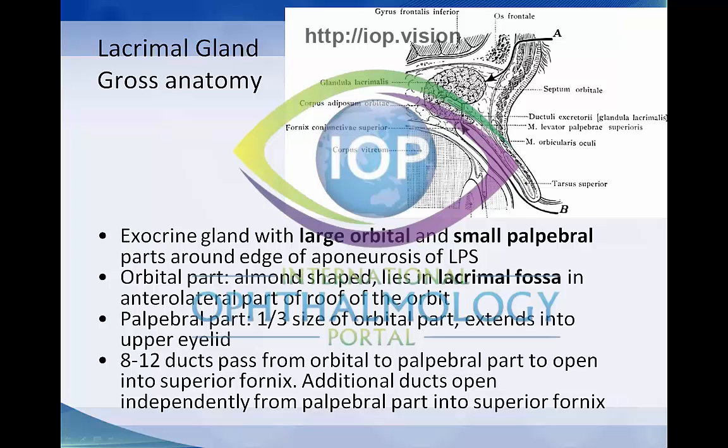The palpebral part is smaller, about a third of the size of the orbital part, and it extends into the upper eyelid. Eight to twelve ducts pass from the orbital to the palpebral part to open into the superior fornix, and additional ducts open independently from the palpebral part into the superior fornix. Clinically, this can be seen with use of fluorescein staining in the superolateral fornix, and release of the lacrimal gland secretions can be identified from dilution of fluorescein in those areas.